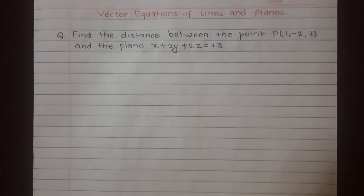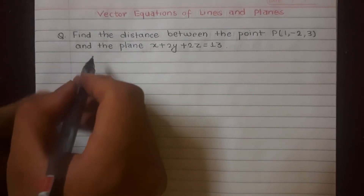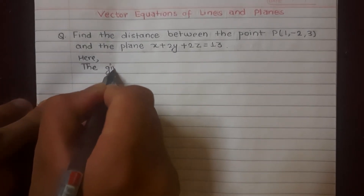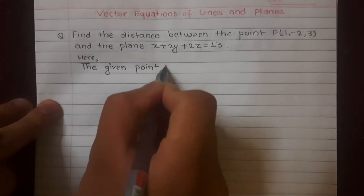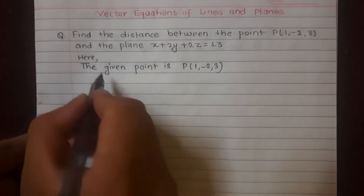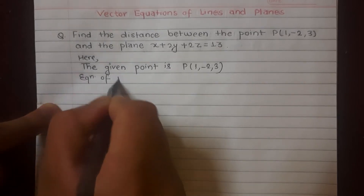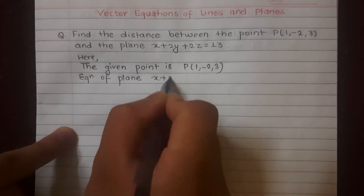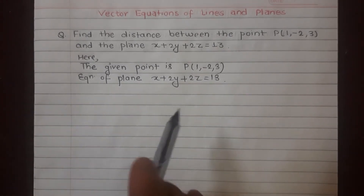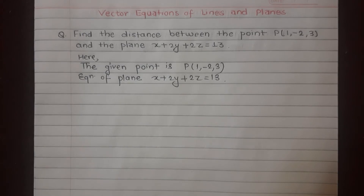Vector equations of lines and planes question: find the distance between the point P(1, -2, 3) and the plane x plus 2y plus 2z equals 13. The given point is P(1, -2, 3) and the equation of the plane is x plus 2y plus 2z equals 13. We need to find the distance between the point and the plane.